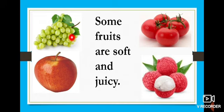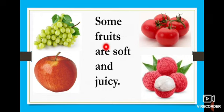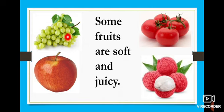What is this, children? Grapes. Very good. And what's this? Apple. And what's this? Tomato. And what's this? Litchi fruit. Now look here — some fruits are soft and juicy — S-O-M-E F-R-U-I-T-S A-R-E S-O-F-T A-N-D J-U-I-C-Y. When you touch grapes, you feel soft. When you press it, you get a watery substance. It's juicy. Some fruits are soft and juicy.